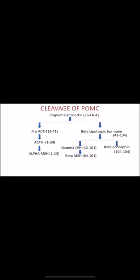POMC, which has 260 amino acids, is cleaved into different hormones: pro-ACTH is cleaved to ACTH, then there is alpha-melanocyte-stimulating hormone (alpha-MSH), beta-lipotropic hormone, gamma-lipotropic hormone, beta-endorphins, and melanocortin-stimulating hormone.